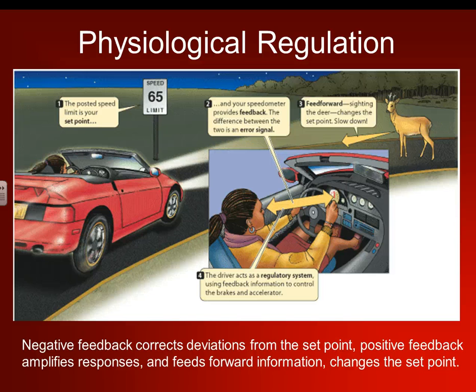So physiological reactions: negative feedback corrects deviations from the set point; positive feedback amplifies responses or creates responses; and feed-forward information changes that set point. Looking at this picture: the posted speed limit is your set point at 65 miles per hour, and your speedometer provides your feedback — how fast you're going. The difference between the two is an error signal.